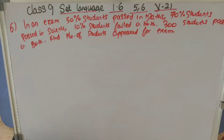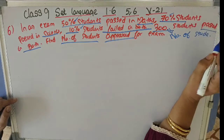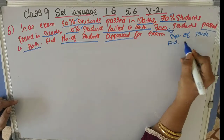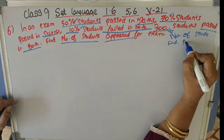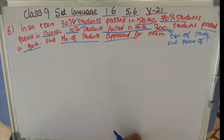Now we go to the sixth question. In an exam, 50% of students passed in maths, 70% of students passed in science, and 10% of students failed in both. 300 students passed in both. We have to find the number of students who appeared for the exam. The 300 students is the only number given; all other things are given as percentages, so we want to find the percentage of students who passed in both.